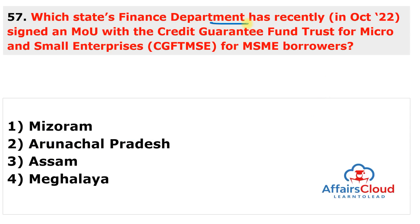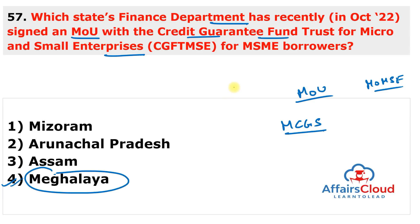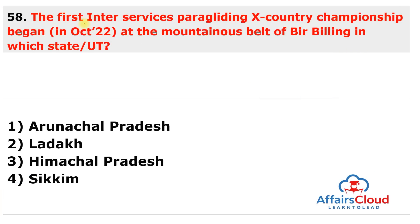Next question: which state's Finance Department recently signed an MoU with the Credit Guarantee Fund Trust for Micro and Small Enterprises for MSME borrowers? The answer is Meghalaya. The Finance Department of the Government of Meghalaya signed an MoU with the Credit Guarantee Fund Trust for Micro and Small Enterprises under the Ministry of MSME to enable the flow of credit to MSME borrowers. The MoU was signed to implement the Meghalaya Credit Guarantee Scheme and will strengthen the credit delivery system and facilitate the flow of credit to the MSME sector in Meghalaya.